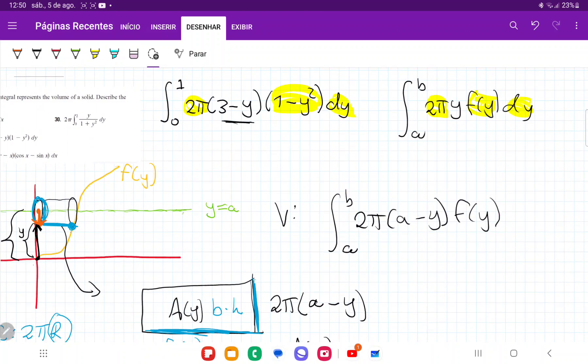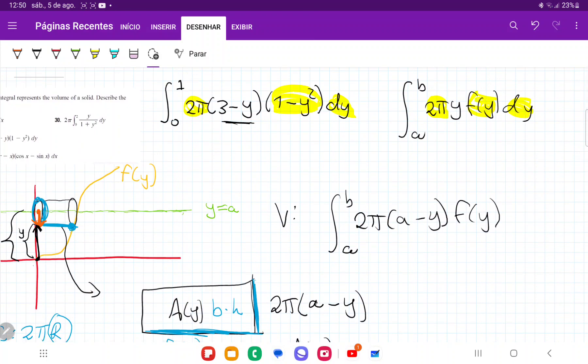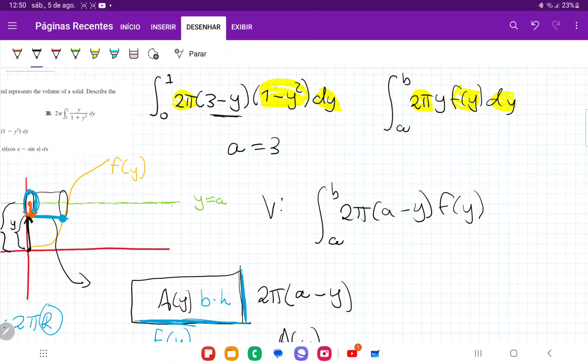So we can see that a to b is going to go from zero to one, and a minus y is equivalent to this 3 minus y, right. So we can see by comparing it that a is equal to three. So actually what is happening here is that we're taking this curve 1 minus y squared, and we're revolving it around the line a is equal to three, or in this case, y is equal to three. And that's how, when we compare it, that's the solid that we get.